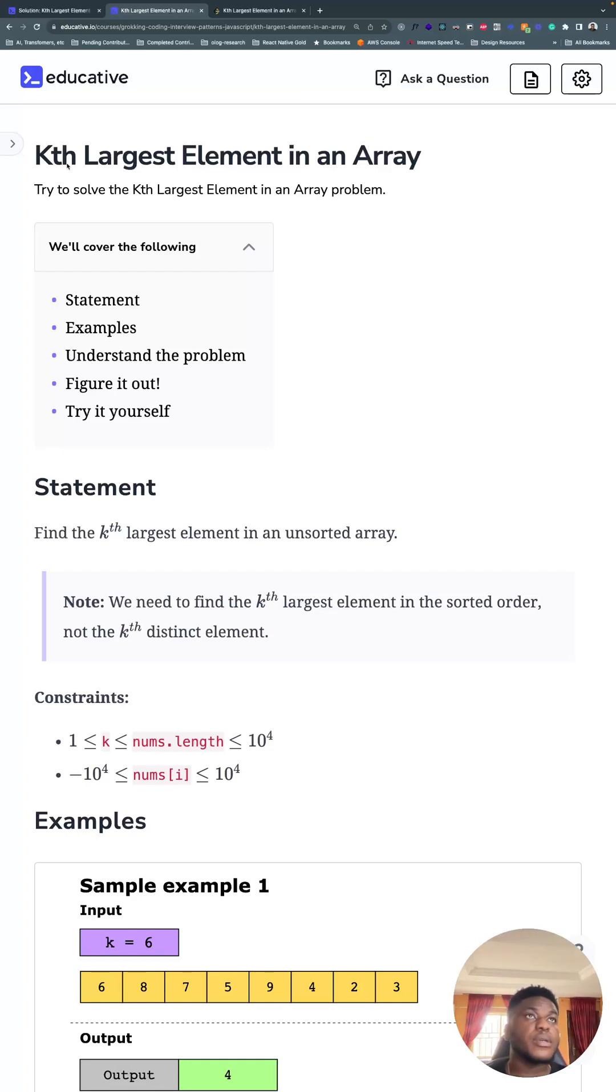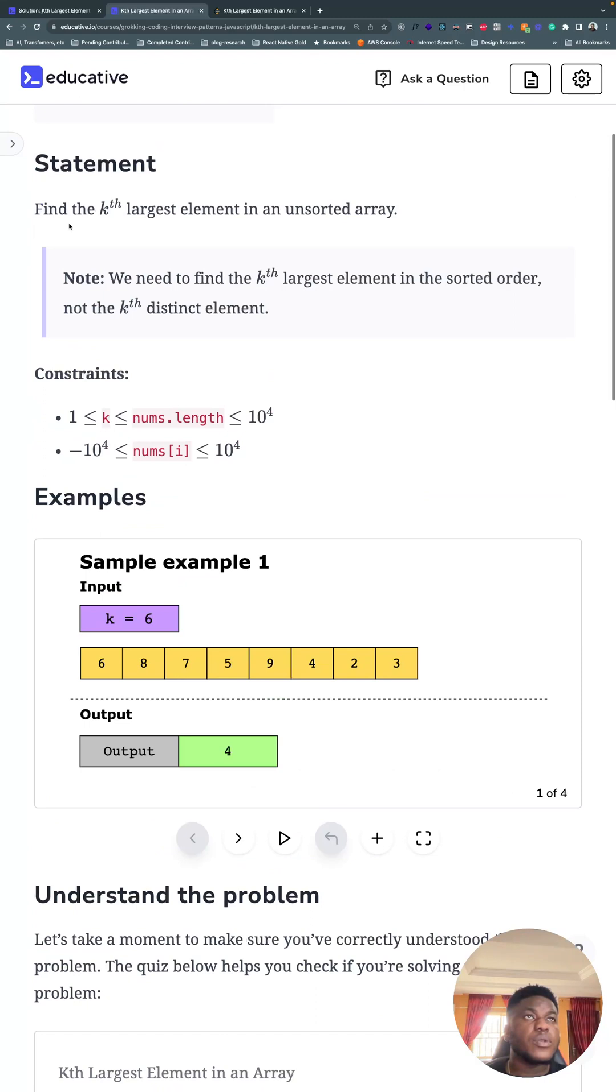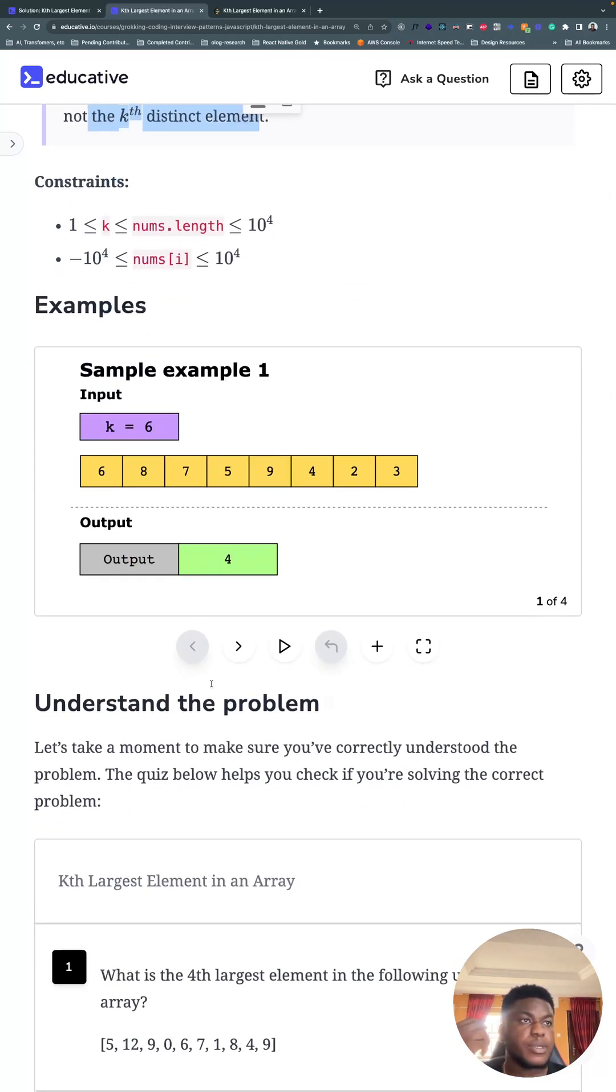Alright, we have another LeetCode medium. Five companies seem to love this problem. And it's the kth largest element in an array. So find the kth largest element in an unsorted array. We need to find the kth largest element in the sorted order, not the kth distinct element.